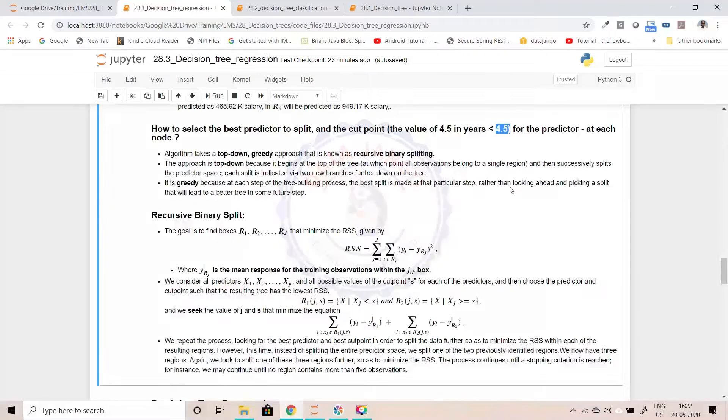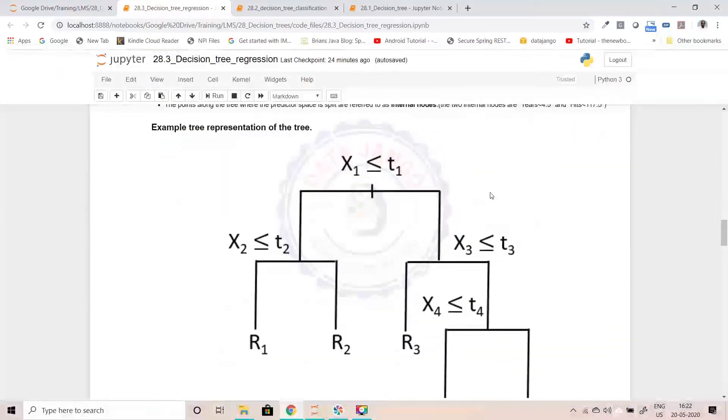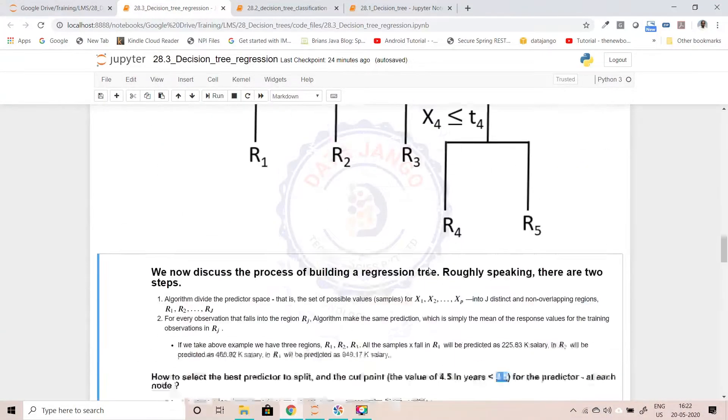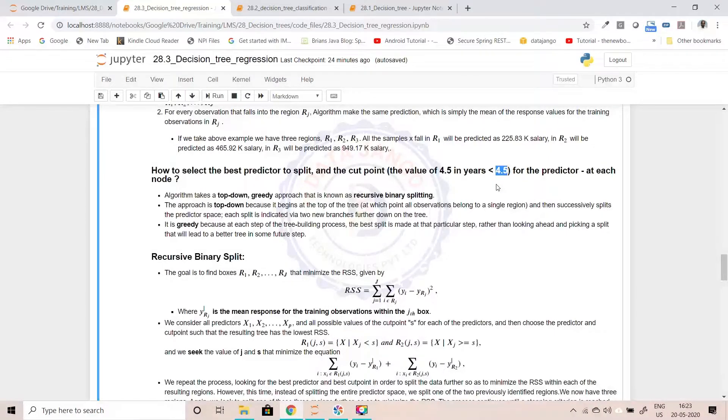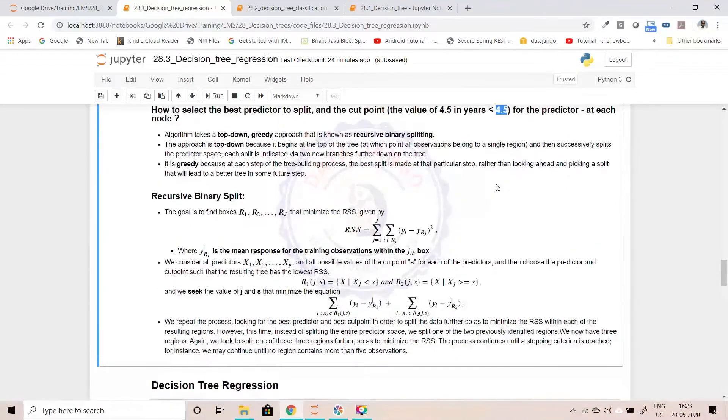You have n number of features, x1, x2 and so on xn, and there are maybe 1000 records. You split the data at 4.5 years of experience, years less than 4.5. Suppose 600 records fall into less than 4.5, 400 fall into greater than or equal to 4.5. The data actually split exactly into two parts like that. This part and this part. So how did you know that 4.5 is the best?